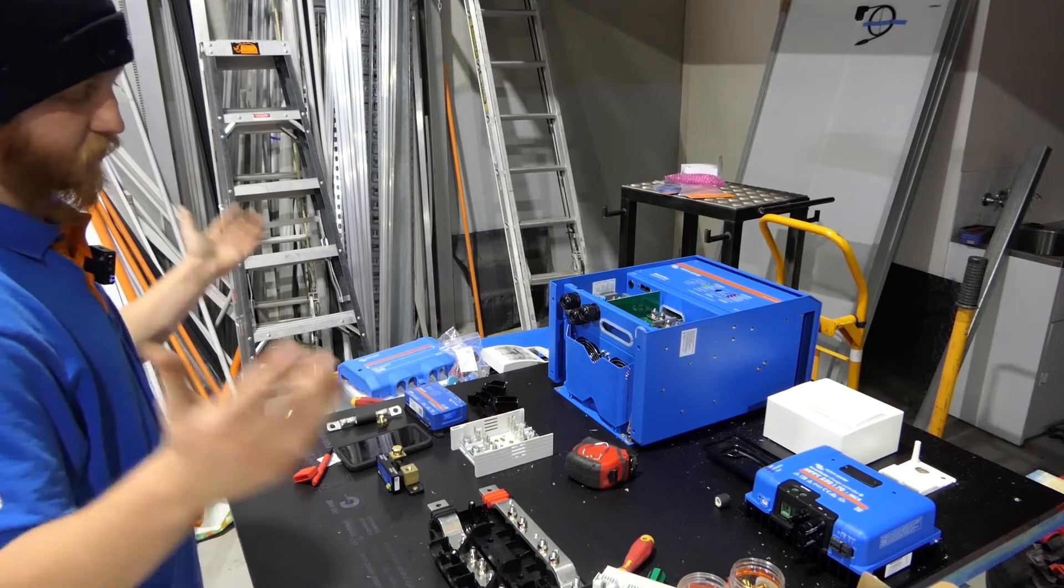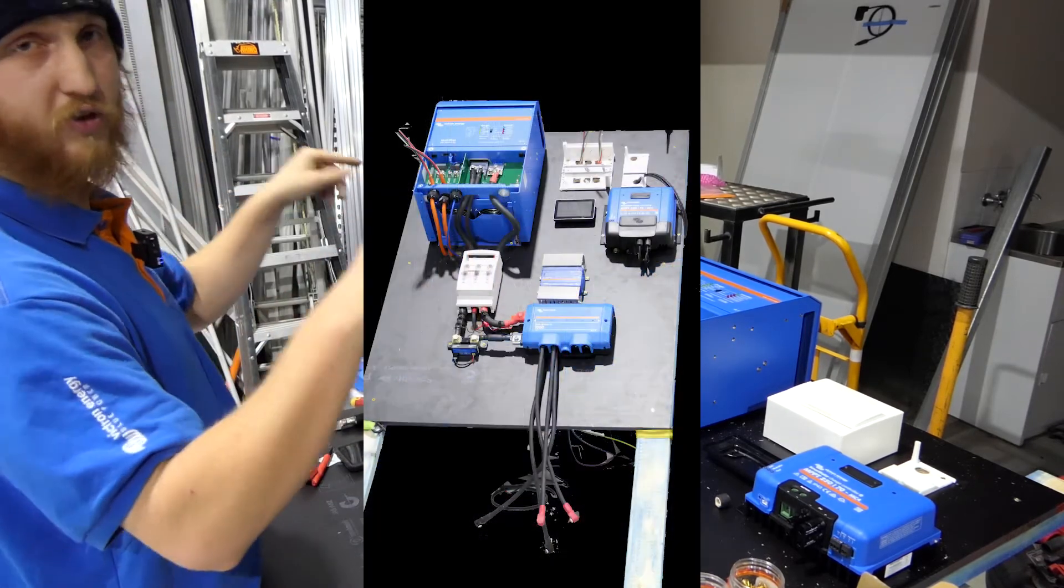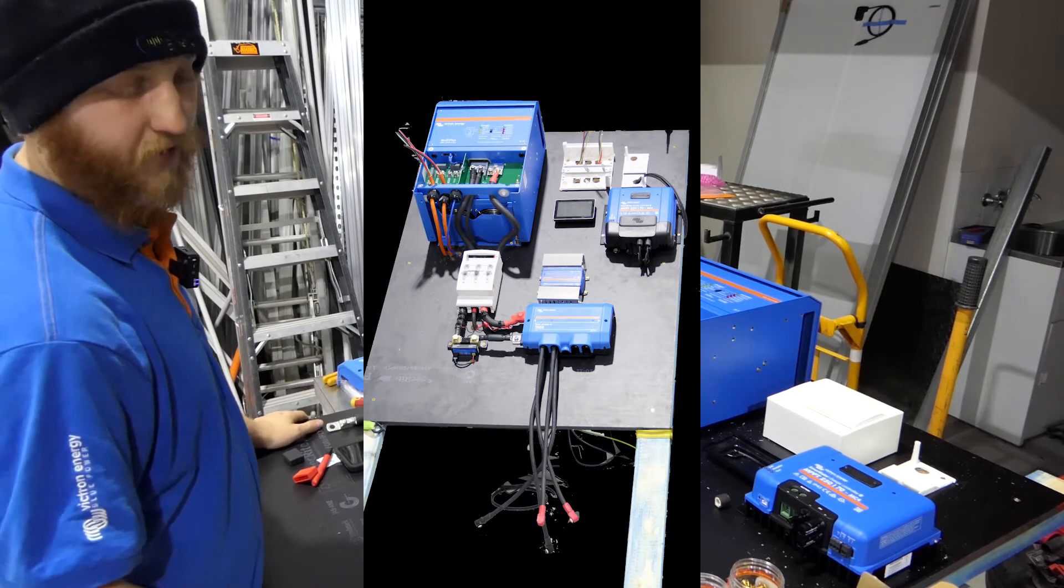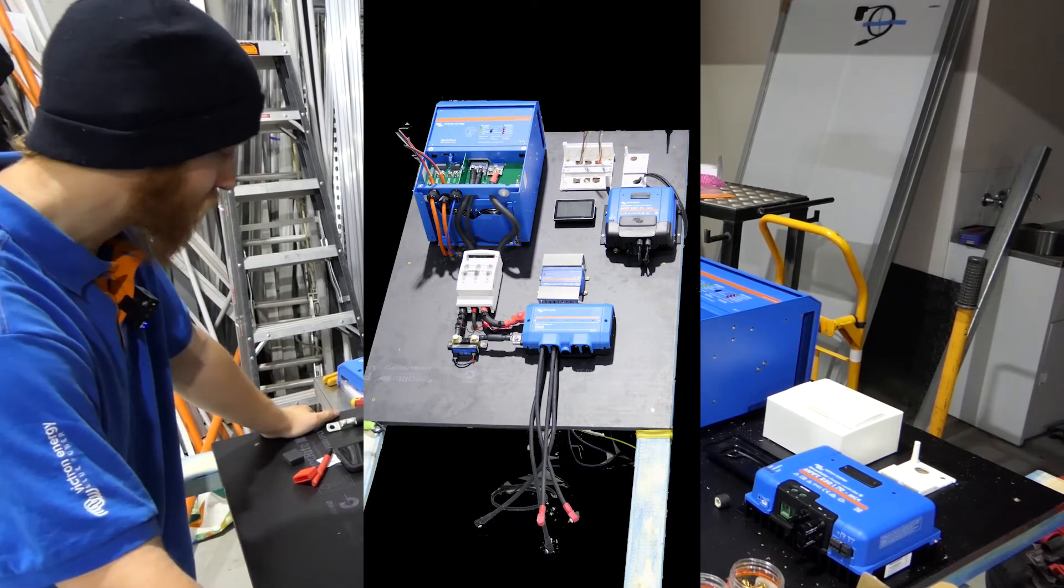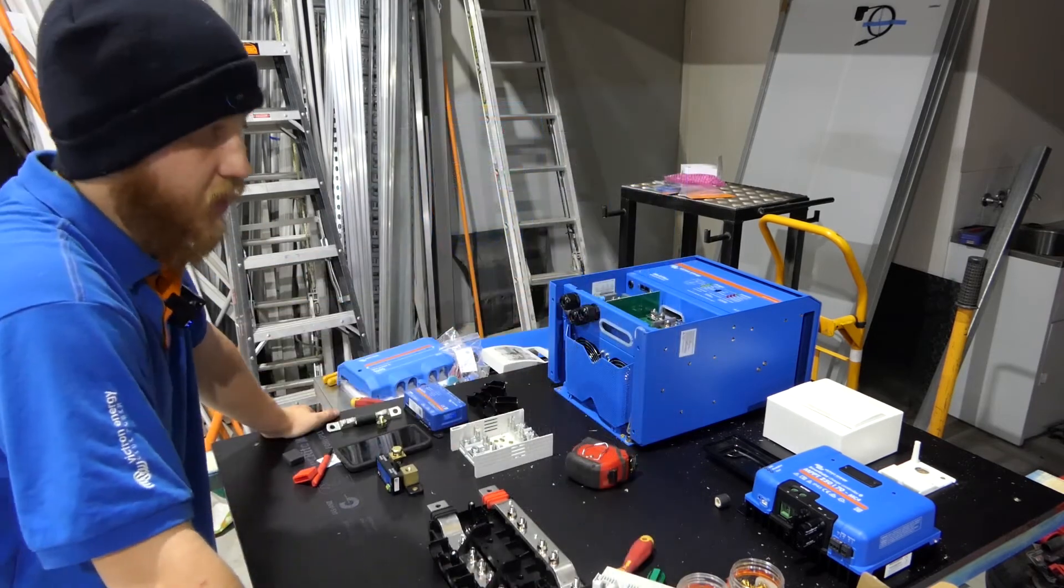So the design for this, the customer will receive their system, they stand it up against the wall and fix it in place, and then all they're going to do is plug the batteries in and run the solar panels to the MC4 connections that'll be in the back of the board up the top there.